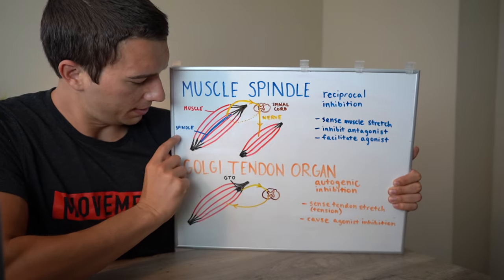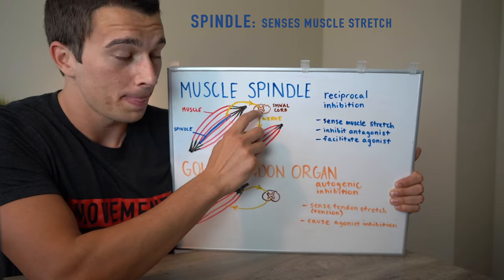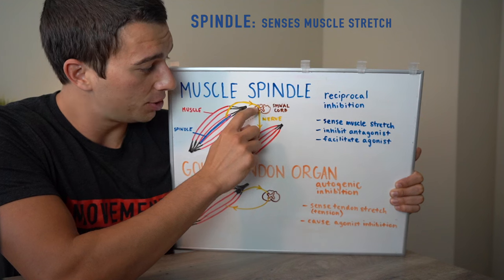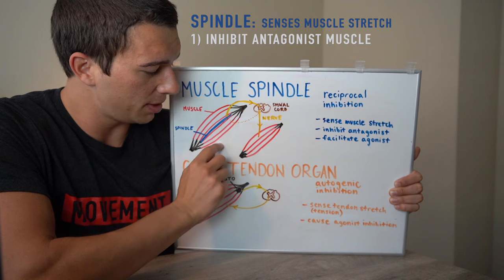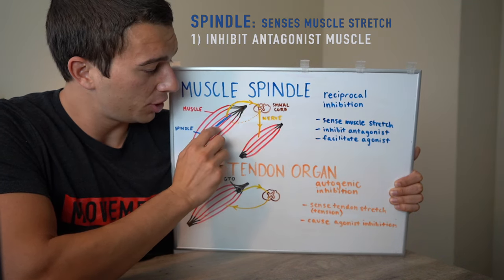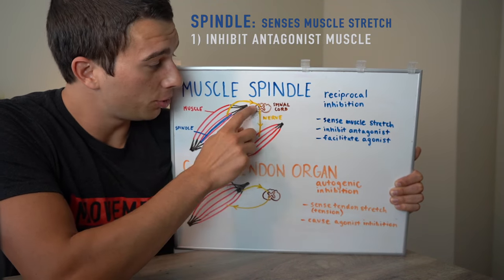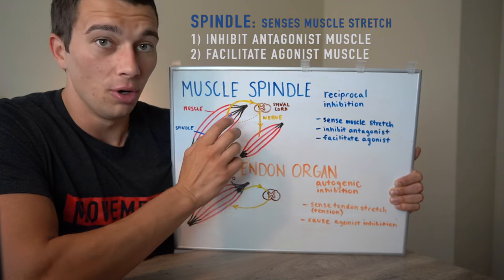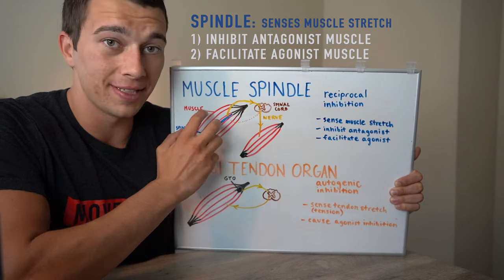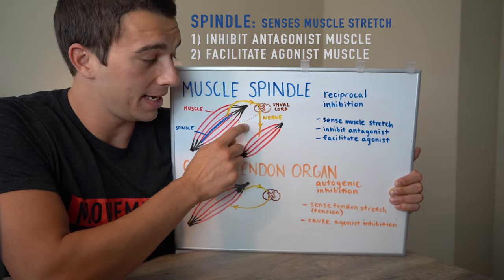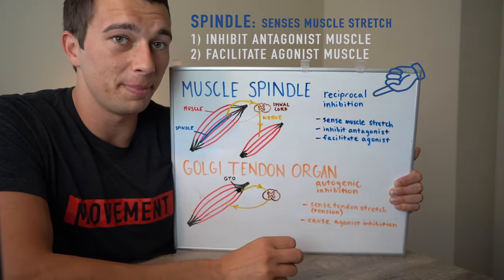This muscle spindle — shown in blue — is sending out a signal as a sensory fiber to the spinal cord. That signal does two things: it's going to inhibit the antagonist muscle on the opposite side of the joint, and it's also going to facilitate activation of the agonist. So what our muscle spindle does is sense muscle stretch, facilitate the agonist, and inhibit the antagonist. That inhibition of the antagonist muscle is what we call reciprocal inhibition.